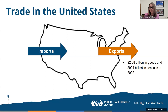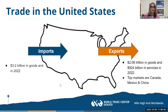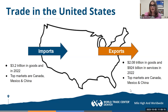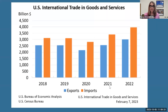The United States exported more than two trillion dollars in goods and 924 billion in services in 2022. For imports, it was 3.2 trillion in goods in 2022. The top markets for imports are Canada, Mexico, and China — and for exports, those are the same major trade partners of the United States.